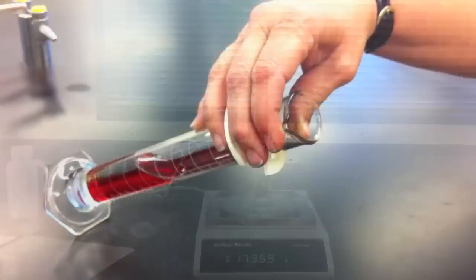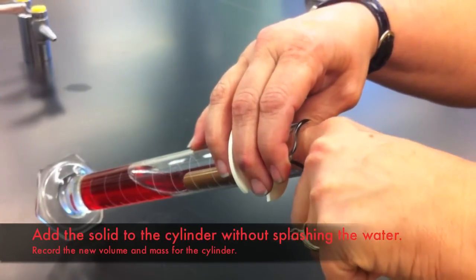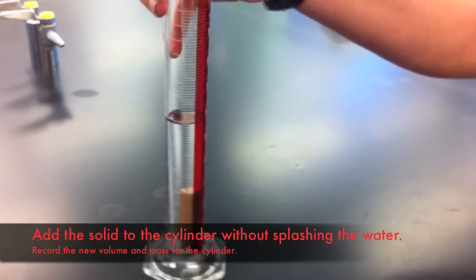After recording the volume of water in the graduated cylinder you can very carefully add the solid to the cylinder. Be sure not to splash any of the water out of the cylinder.